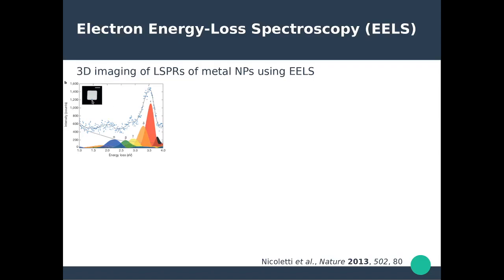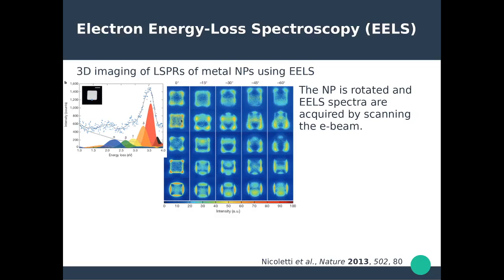If you have a nanoparticle and you excite it at a given location with an electron beam, you obtain an EELS spectrum where you can identify the various localized surface plasmon modes that contribute to the EELS signal. Once you decide which energy you want to focus on, you can scan the electron beam across the nanoparticle and filter out only one given energy, selectively generating two-dimensional mappings of loss probabilities that represent the plasmon resonances at given energies.